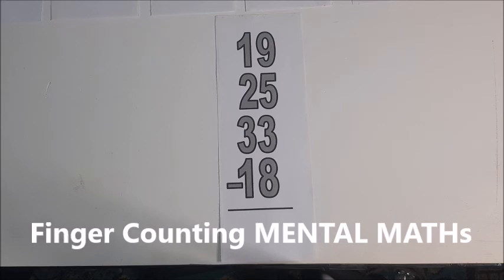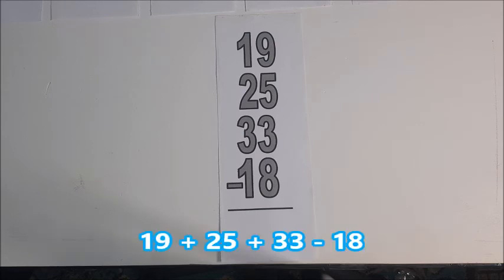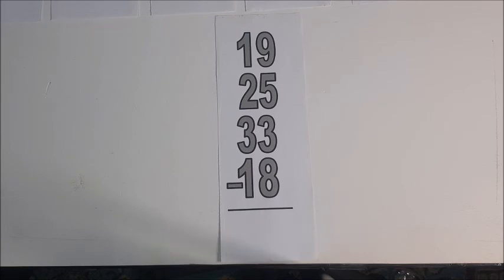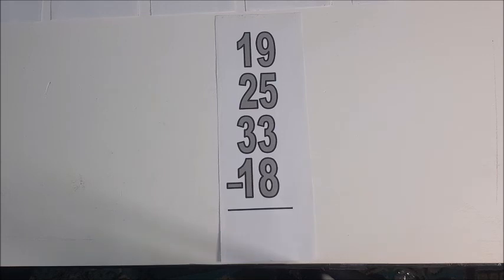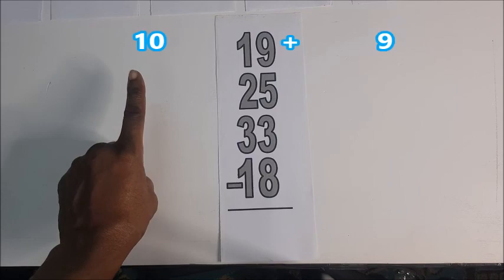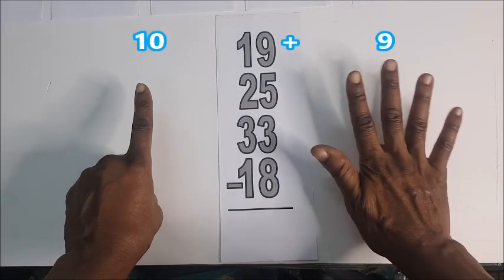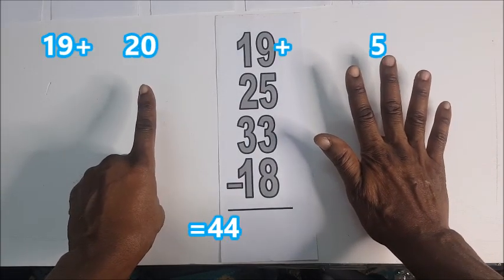Now we have 19 plus 25 plus 33 take away 18. Let me see your whole body, your mind, your ears, your eyes, everything please. Let's concentrate. Now let's start: 19, we have 10 here, 9 here. 19 plus